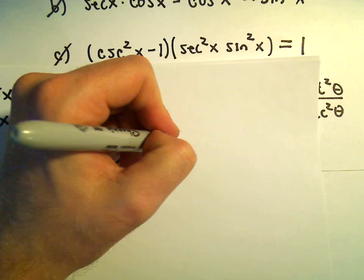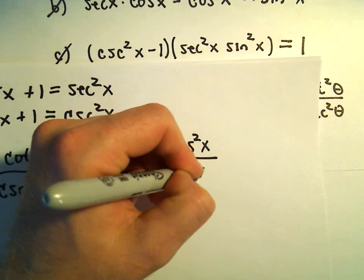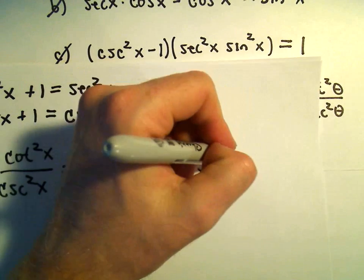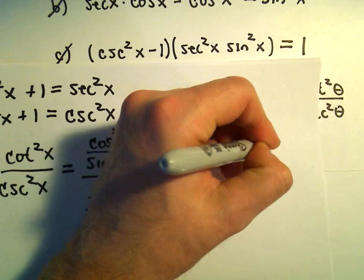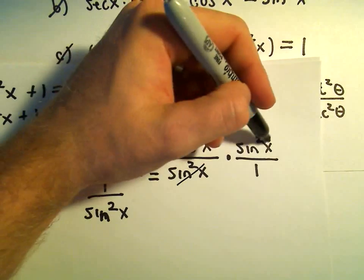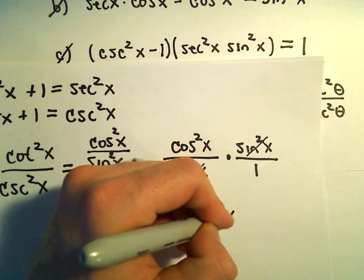So that's going to give me cosine squared x over sine squared x. And now I can take the bottom fraction and just flip it. We'll have sine squared x over 1. Well, we can cancel the sine squareds out and we'll simply be left with cosine squared x.